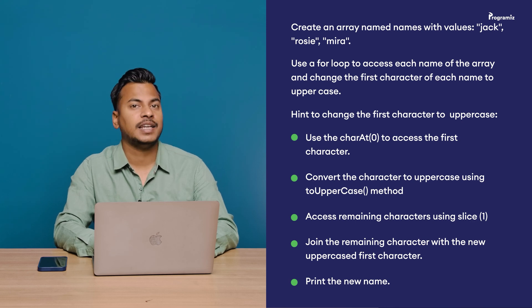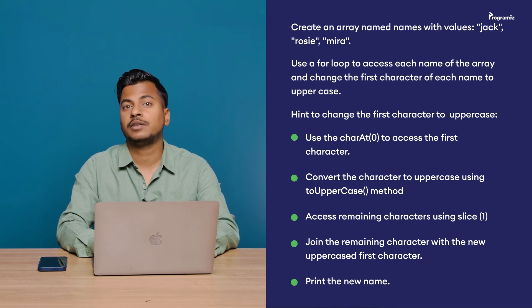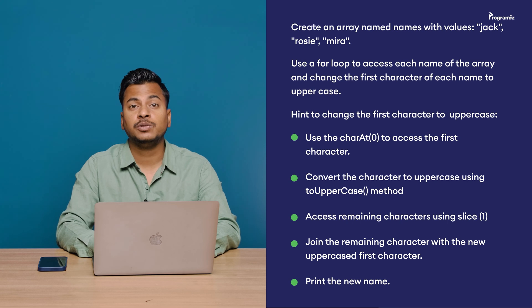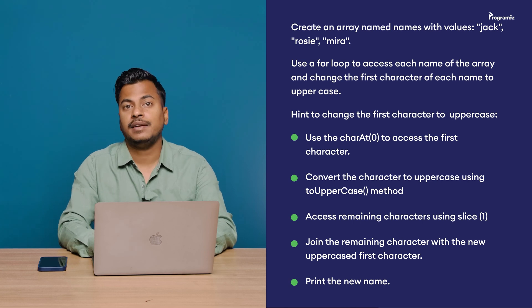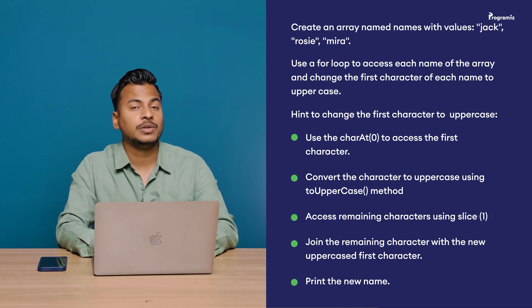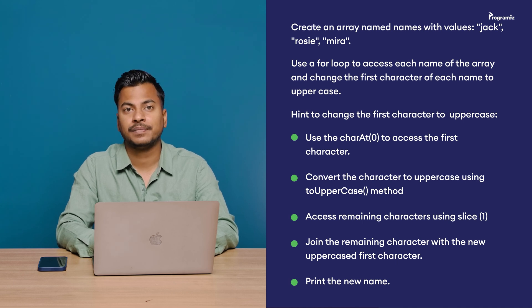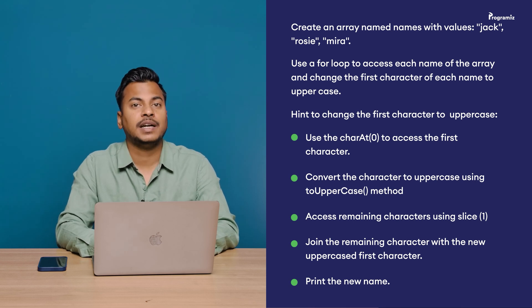Now to practice what we've learned, here's a programming task: Create an array named names with values jack, rosie, and mira. Use a for-of loop to print each name, but change the first character to uppercase. Hint: use charAt(0) to get the first character and toUpperCase() to capitalize it, then use slice(1) to get the rest of the characters, join them together to get the new name, and print it with console.log. You'll find the correct answer in our GitHub repository — link in the video description.